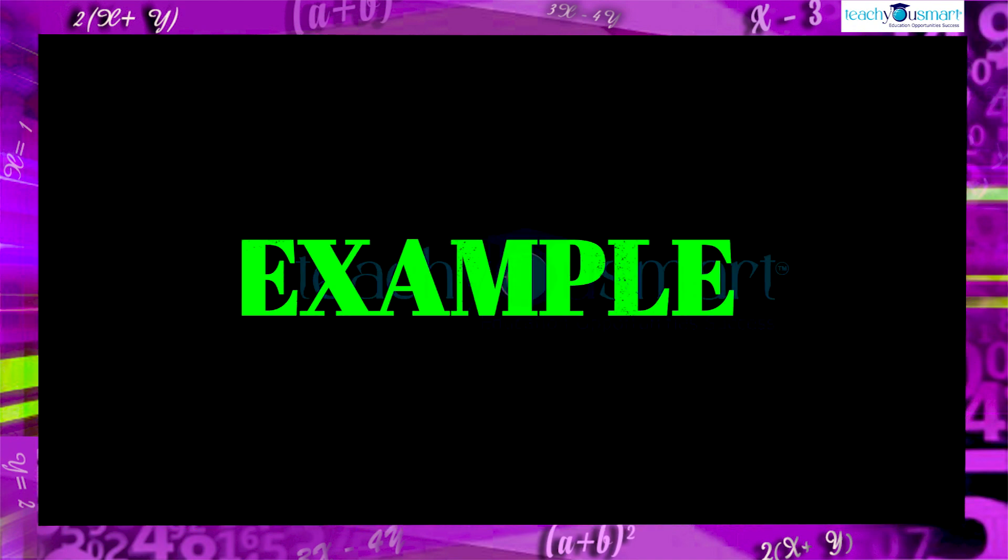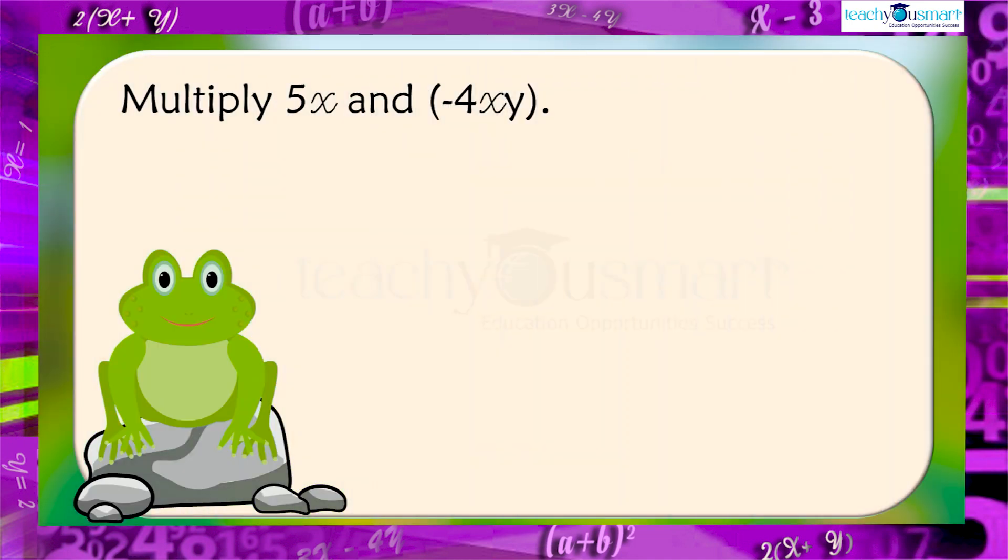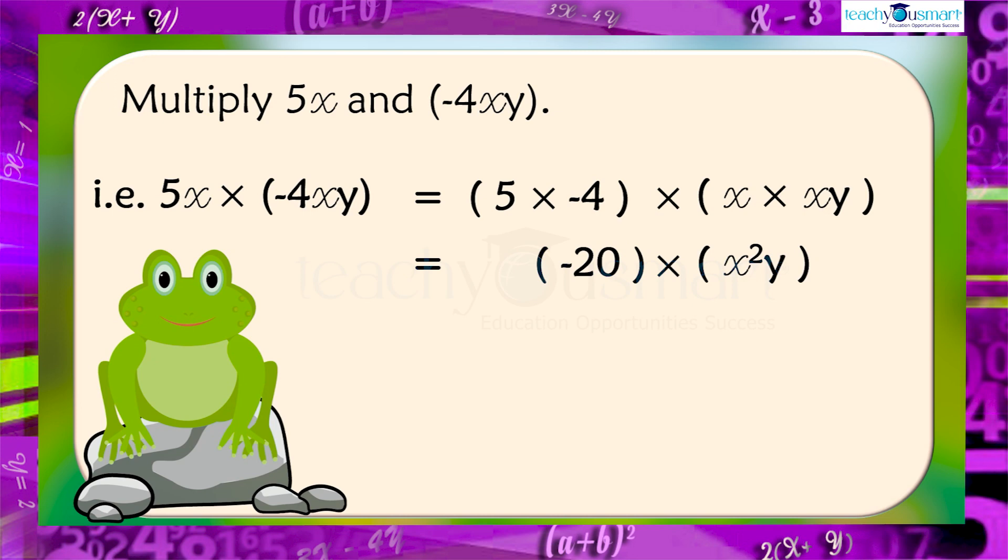Let's do another example. Multiply 5X and minus 4XY. That is, 5X into minus 4XY equals 5 multiplied by minus 4, multiplied by X, multiplied by XY. Equals minus 20 multiplied by X square Y. Equals minus 20X square Y.